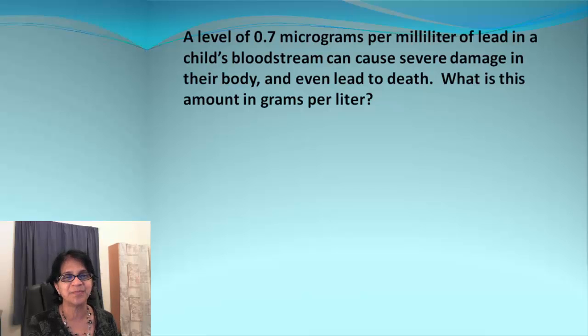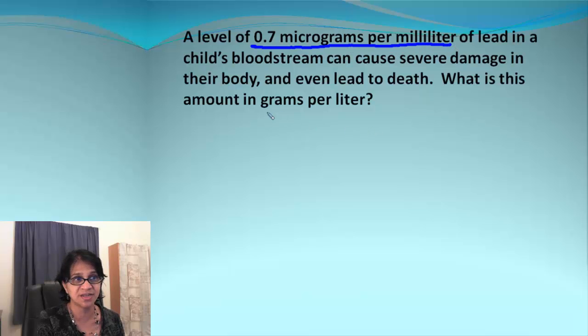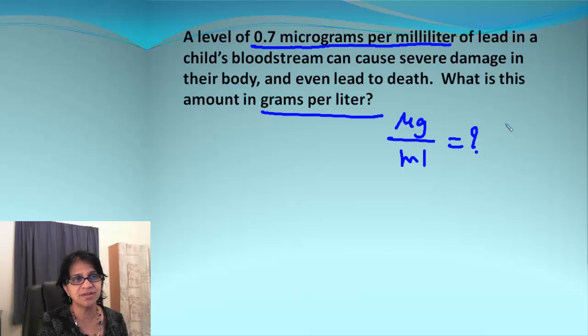So let's take an example here. In this example, we are converting 0.7 microgram per milliliter to grams per liter. So my road map becomes microgram per milliliter equals how many grams per liter. We are going to find out how we can go from microgram to gram and how we can go from milliliters to liters.